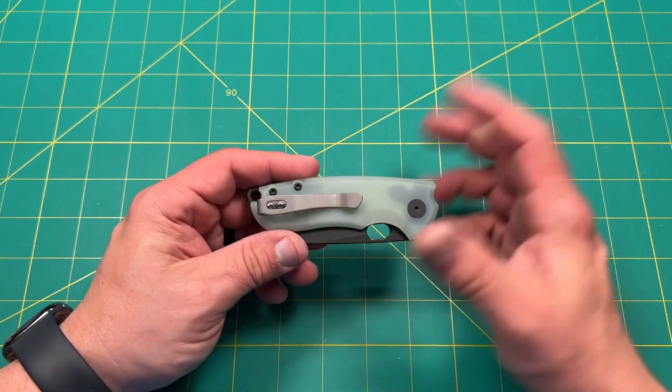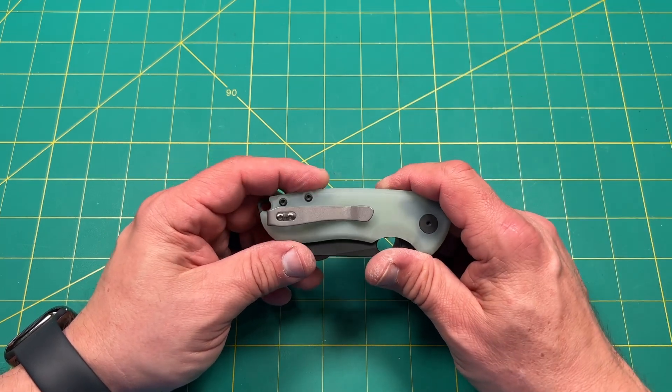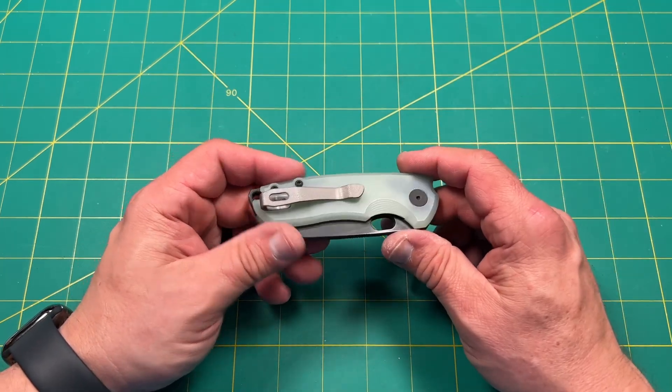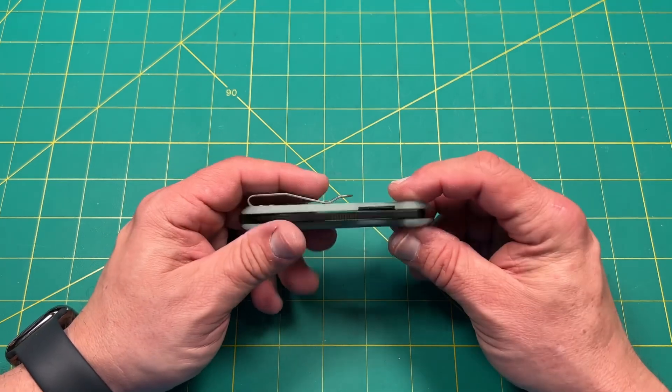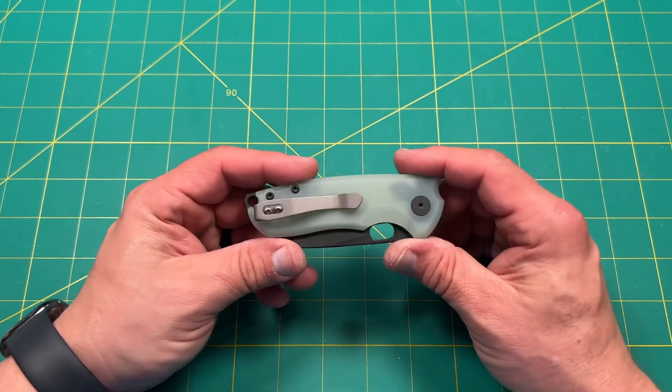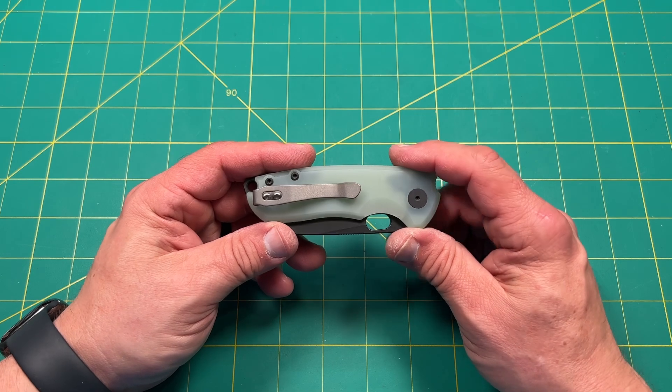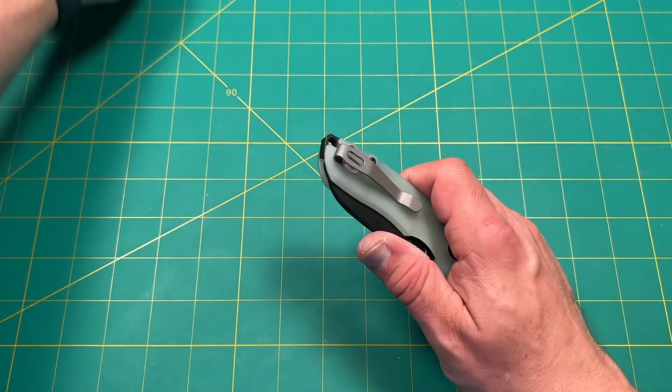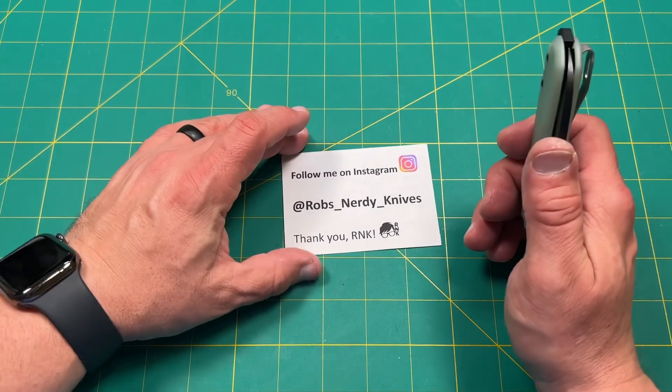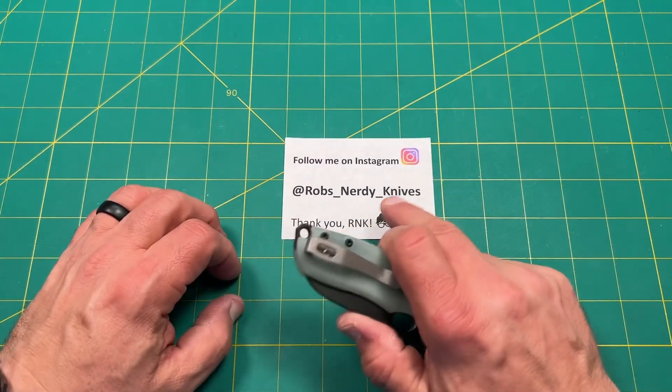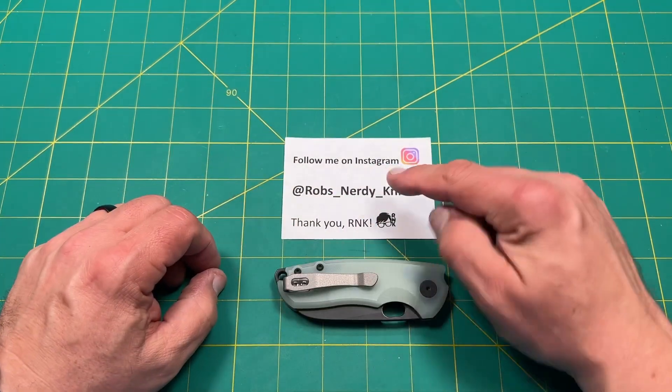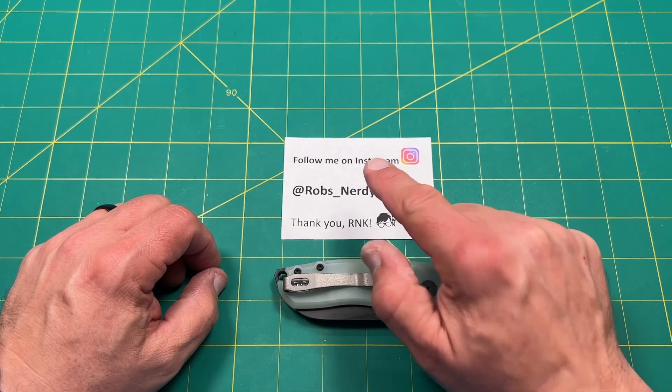Because, you know, vendors will actually send me a knife to review. That was a first thanks to all you guys and all you subscribers, so that's really cool. I would love to keep growing and being able to do more of that. Hey, and if you found all that interesting, maybe you want to check me out over on Instagram at robs underscore nerdy underscore knives. That's robs underscore nerdy underscore knives on Instagram.